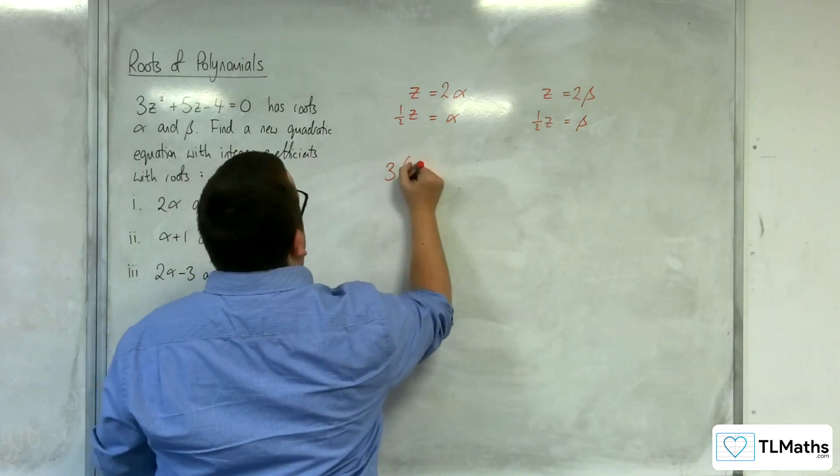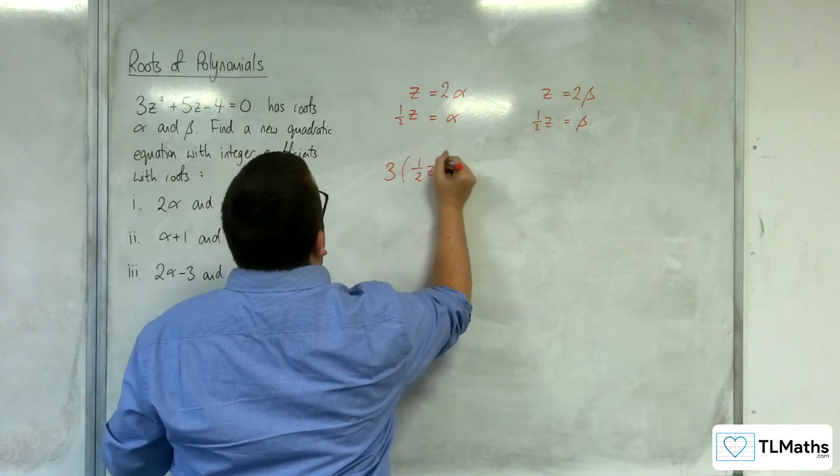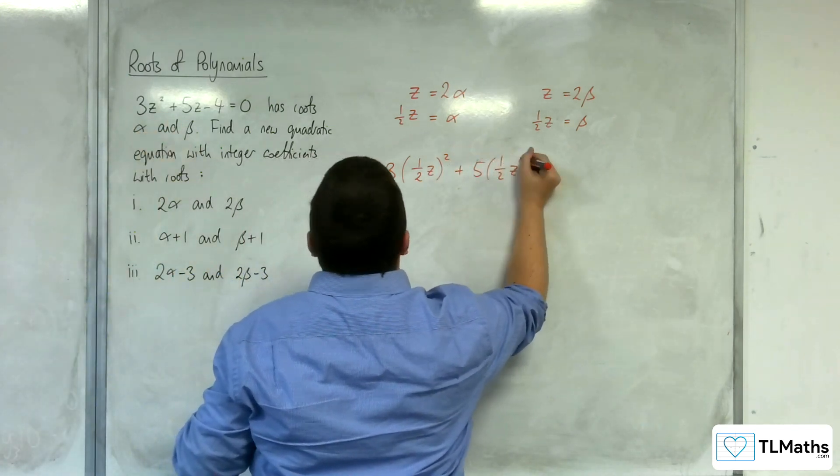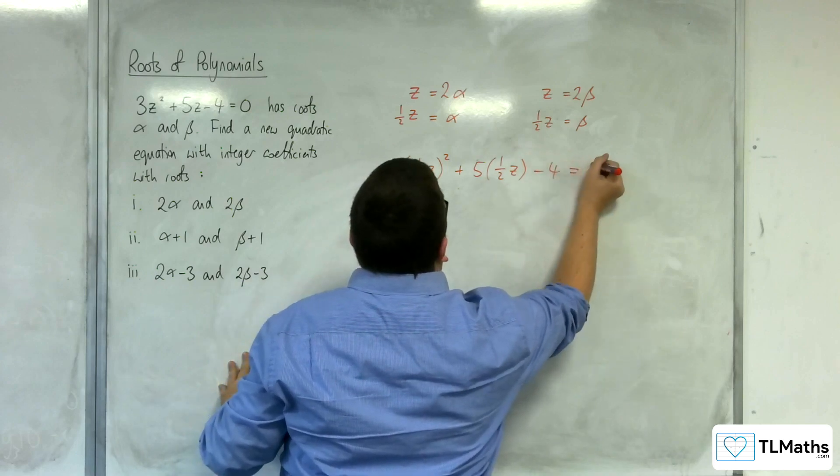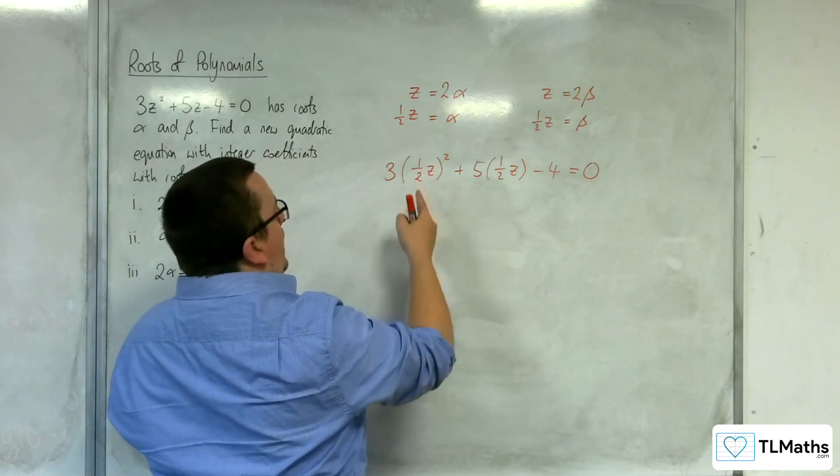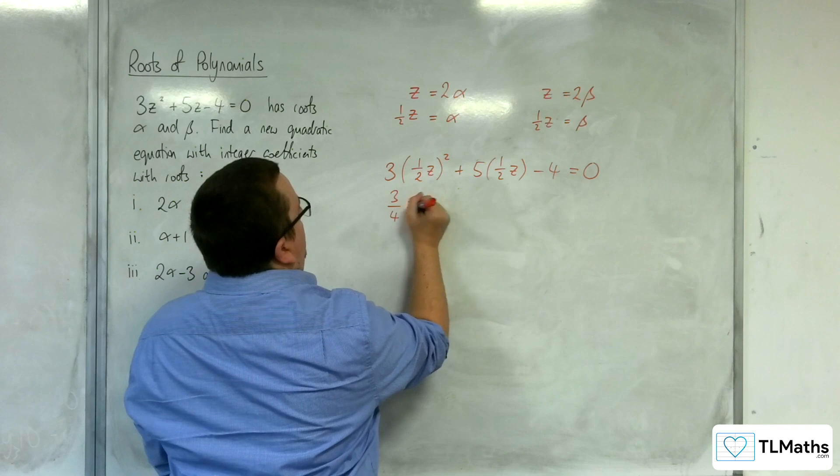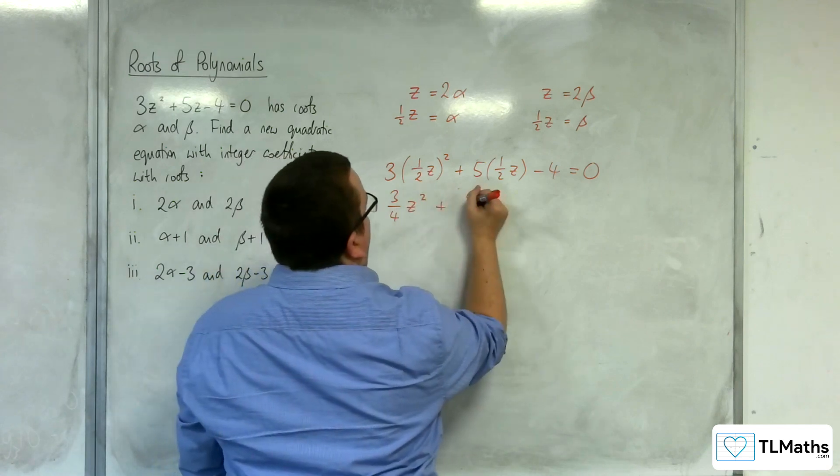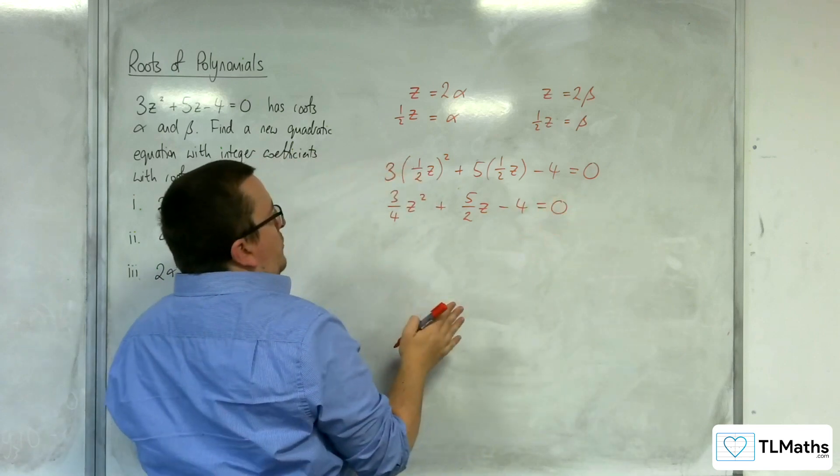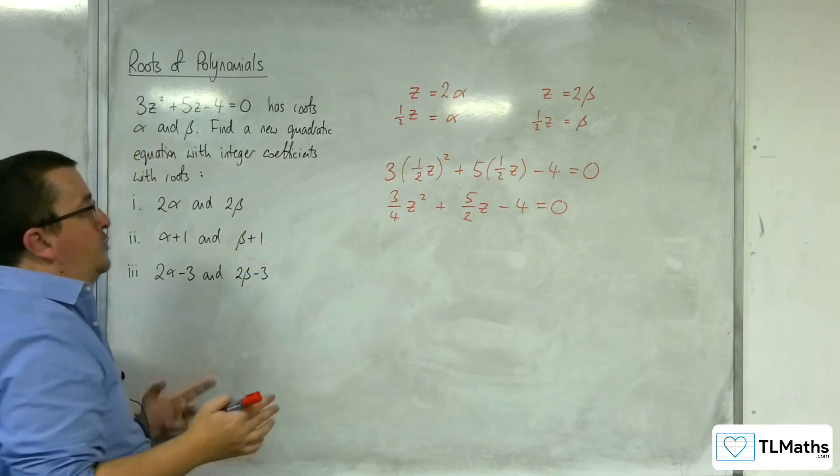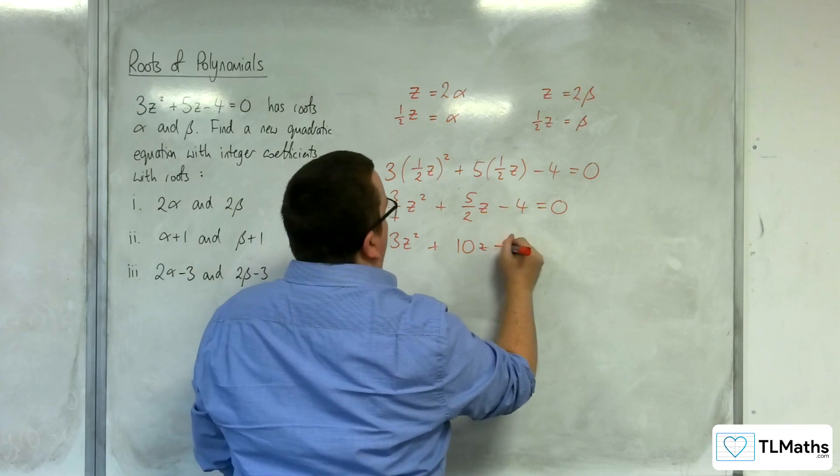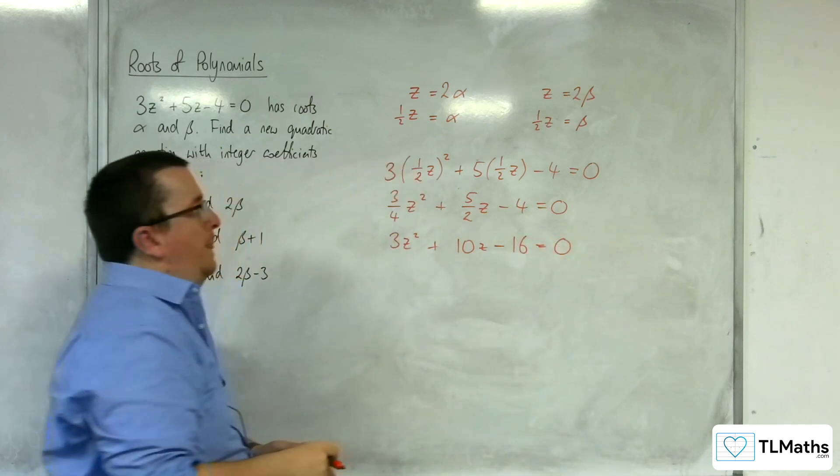So we would have 3 lots of 1 half z squared, substituting it directly in, plus 5 lots of 1 half z, take away 4 equals 0. So we've got 3 lots of 1 half z squared, so that's 3 quarters z squared, plus 5 halves z, take away 4 equals 0. Now if I multiply through by 4 to get the integer coefficients, I'm going to get 3z squared plus 10z take away 16 equals 0.